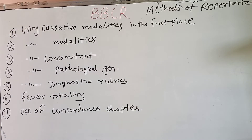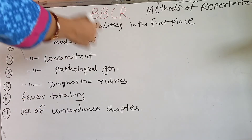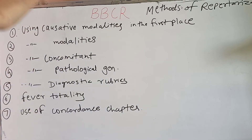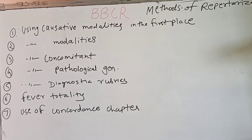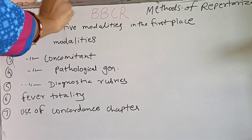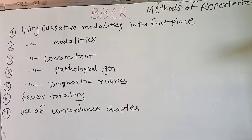Dr. Bogar has given the mental state for the final selection of the drug. He says that the interdependence of mental and physical state is so great that we cannot afford to overlook it entirely. Mind is given adequate importance for selecting a drug — the remedy selected must always be in agreement with the mind. However, in Dr. Bogar's approach, mental symptoms are used for final differentiation rather than being the primary starting point.